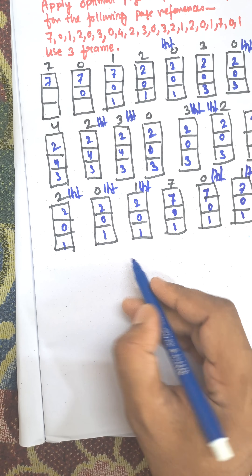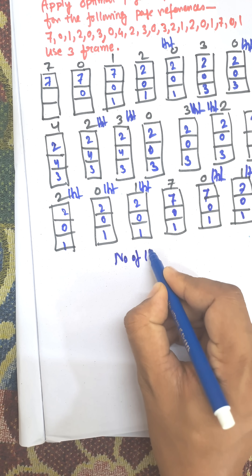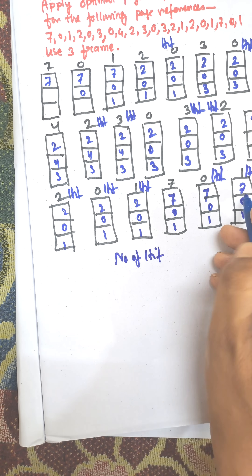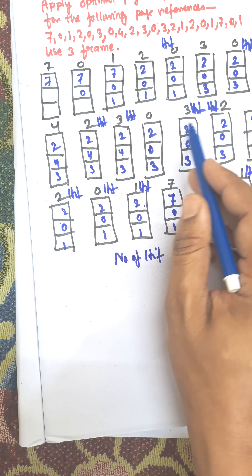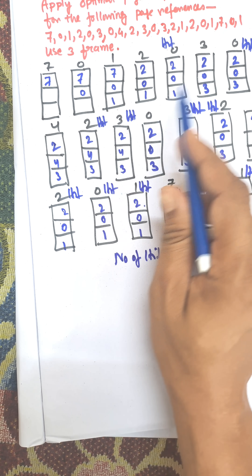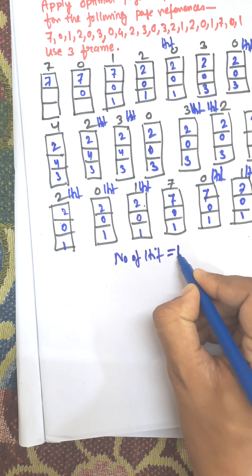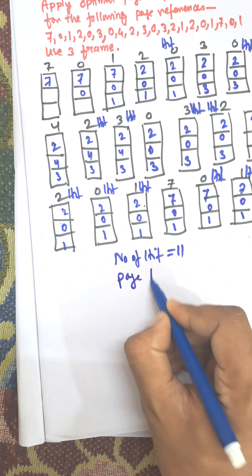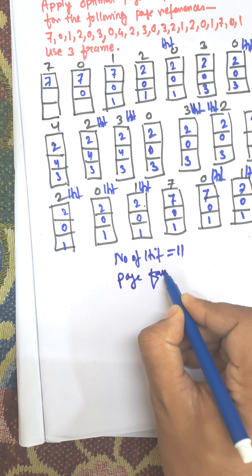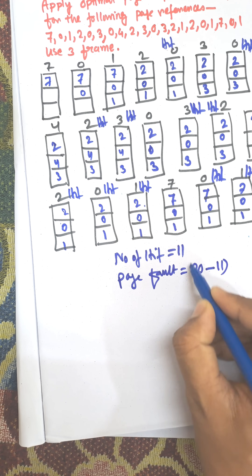Counting all hits: 1, 2, 3, 4, 5, 6, 7, 8, 9, 10, 11. Number of hits equals 11. Therefore, page faults equal total references minus hits — 20 minus 11 — which equals 9 page faults.